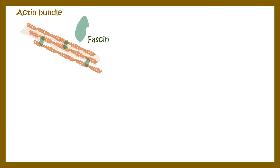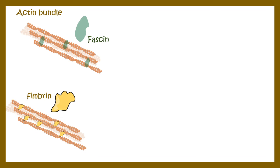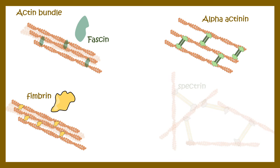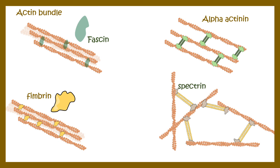There are dedicated proteins that cross-link actin, such as fascin, fimbrin, alpha-catenin, and spectrin. These proteins govern whether actin networks are stable or prevent them from dissociating too rapidly. They are very important for maintaining the rigidity of the cell and the overall structure of the actin networks.